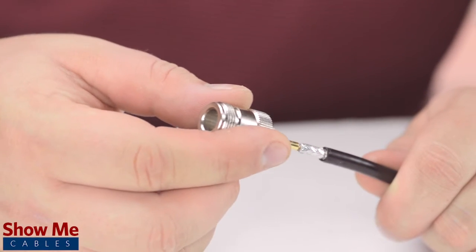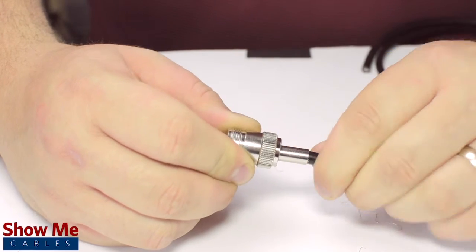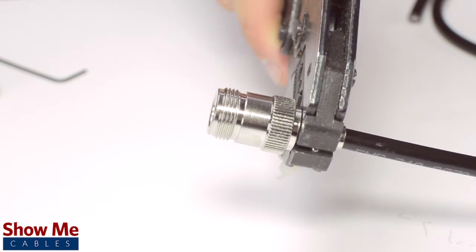Place the connector onto the cable and pull the ferrule up to the base of the connector, folding the shield with it. Then use the crimp tool to terminate the ferrule onto the jacket.